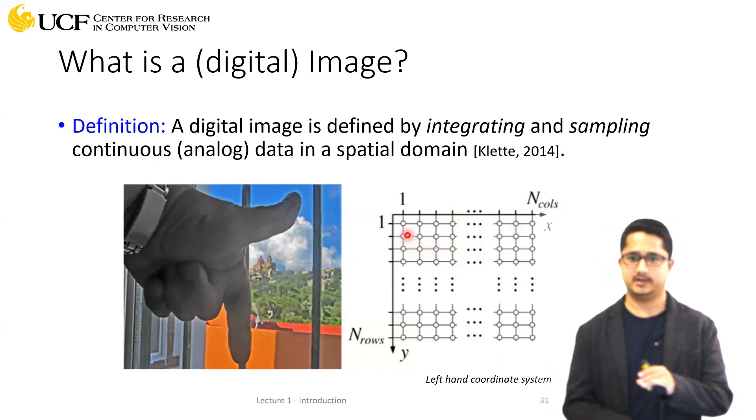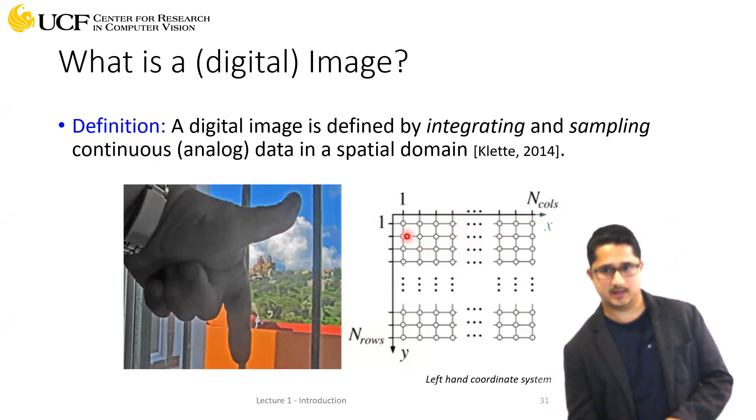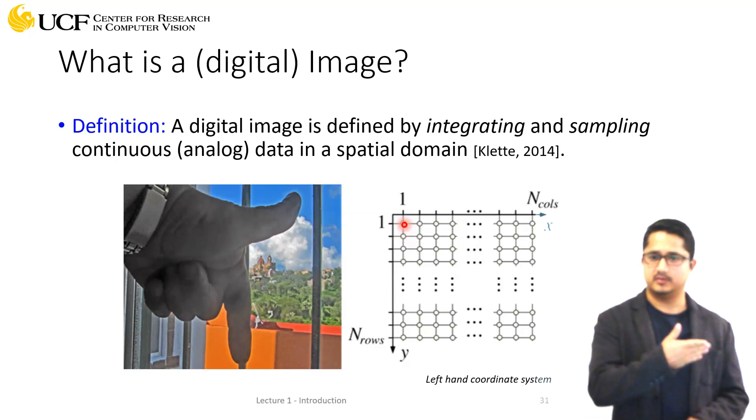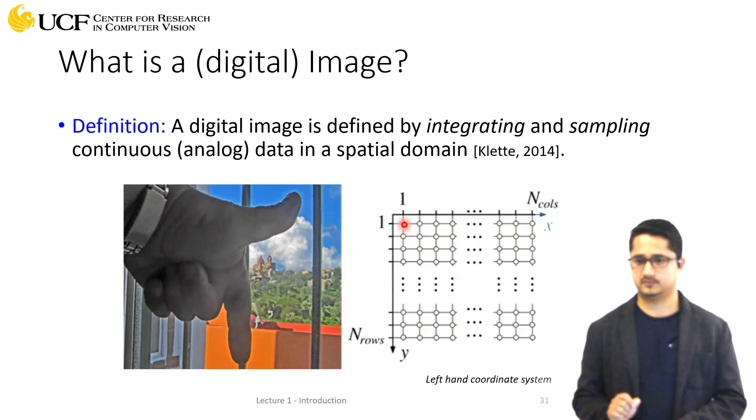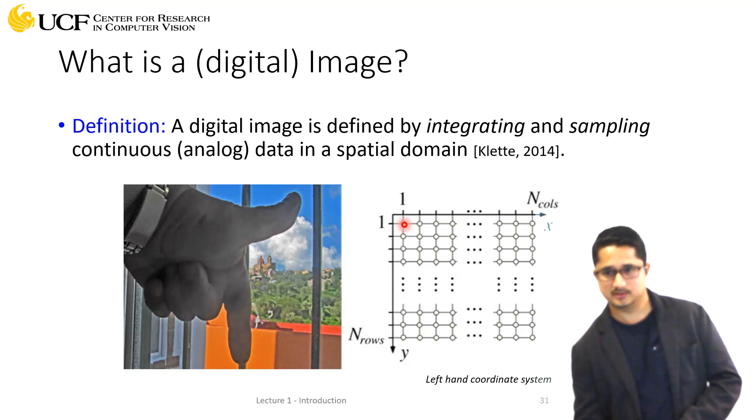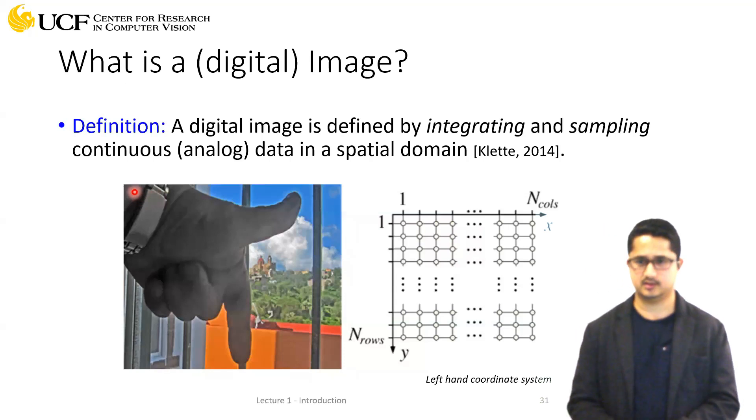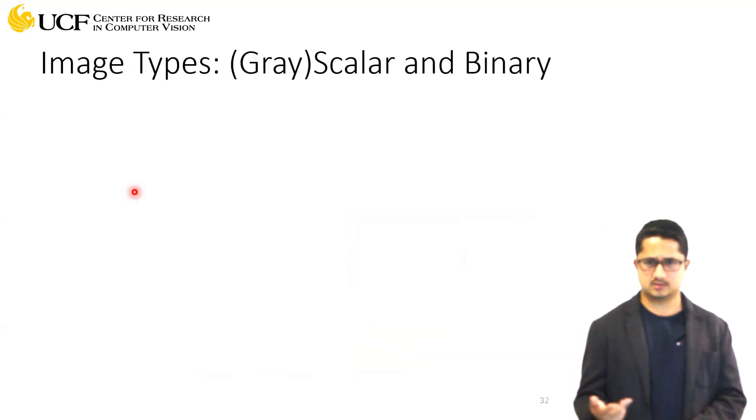At each location we have some value. Each image is represented in the form of this array, and the value at each location represents what is being shown corresponding to that location in the image.